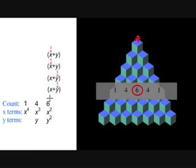The next one over, two lefts and two rights, that gets us x squared and a y squared, and there's six ways of reaching this position right here.